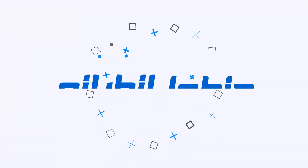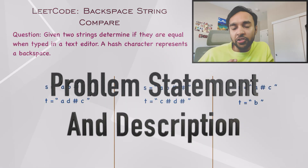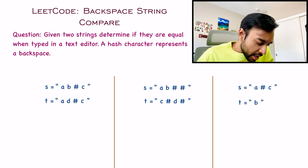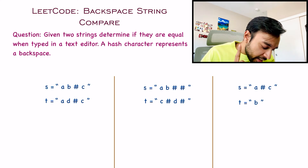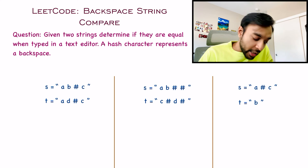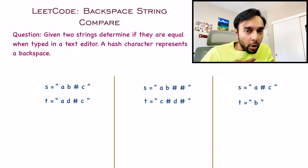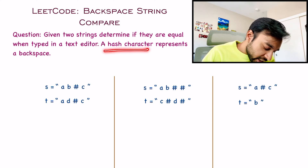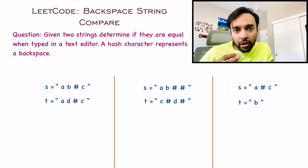Without further ado, let's get started. First of all, let us make sure that we are understanding the problem statement correctly. In this problem, you are given two strings and you have to determine if they are equal when typed in a text editor. Along with that, you are given an extra piece of information: a hash character represents a backspace.